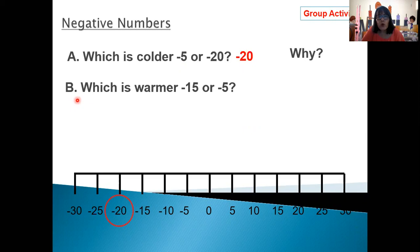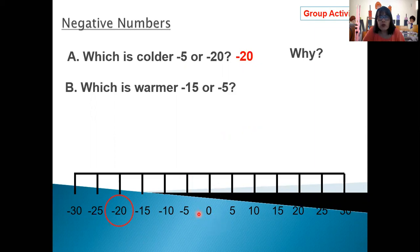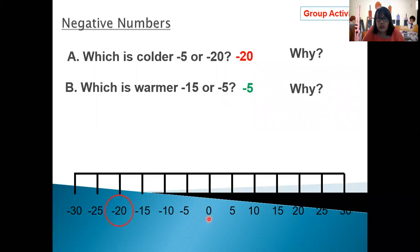Now, which is warmer — negative 15 or negative 5? Which number is closer to zero? Negative 15 is here, negative 5 is here, and this is zero. The more it is closer to zero, the warmer it is — for negative numbers. Negative 5 is warmer than negative 15 because negative 5 is closer to zero compared to negative 15. Is that clear? Very good.